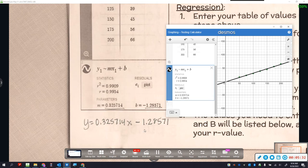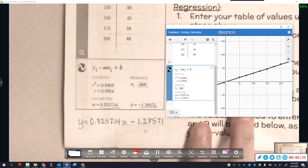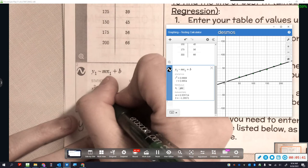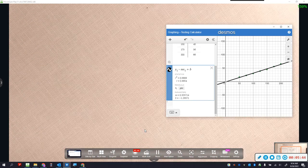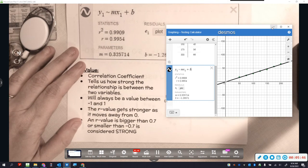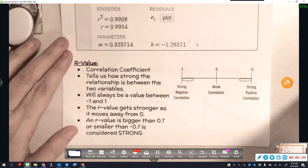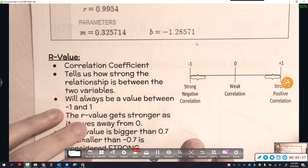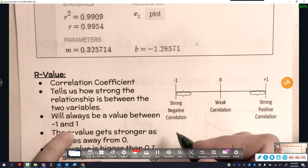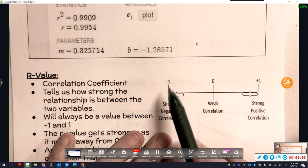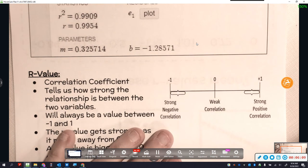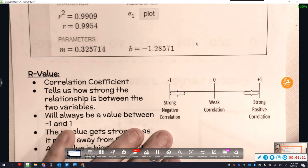You will be asked about this on STAAR and on your unit test, so make sure you know how to do this part. Now there's another thing here, this R value right here. Let's talk about what this R value means. The R value is called the correlation coefficient. Big words. What that means is, the R value tells us how strong the relationship is between these two variables. First thing you have to know: R value is always going to be a value between negative 1 and positive 1.